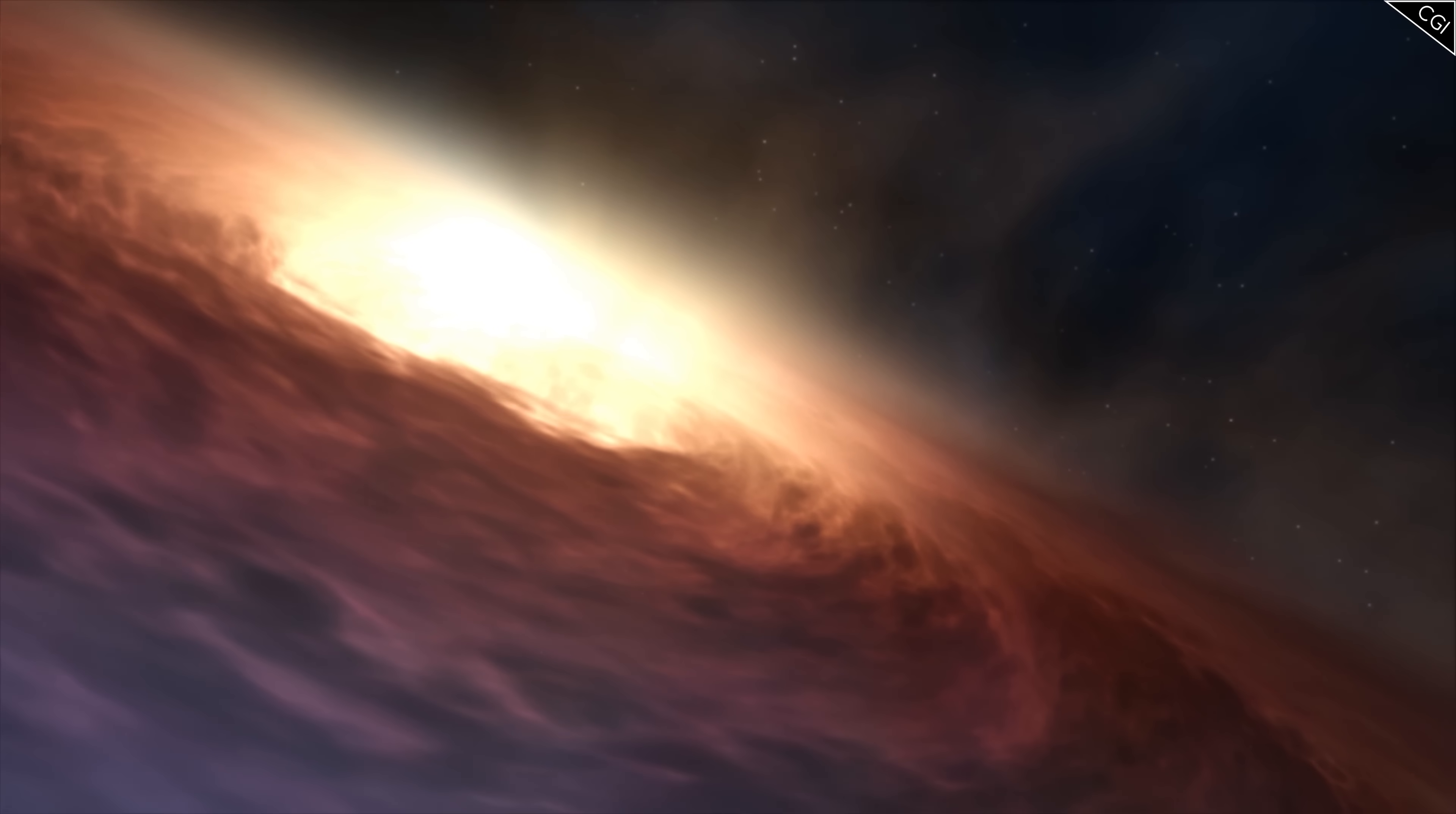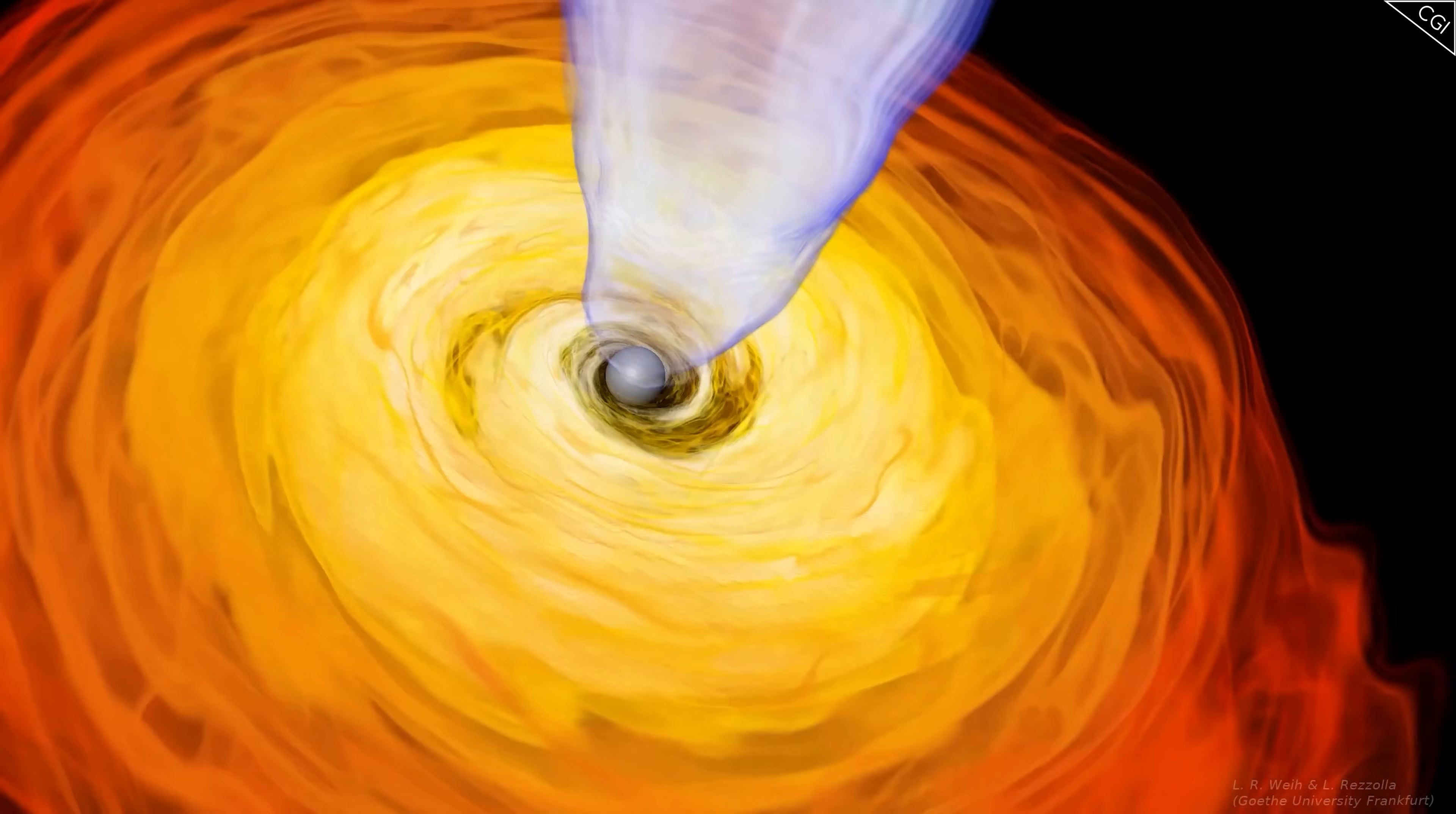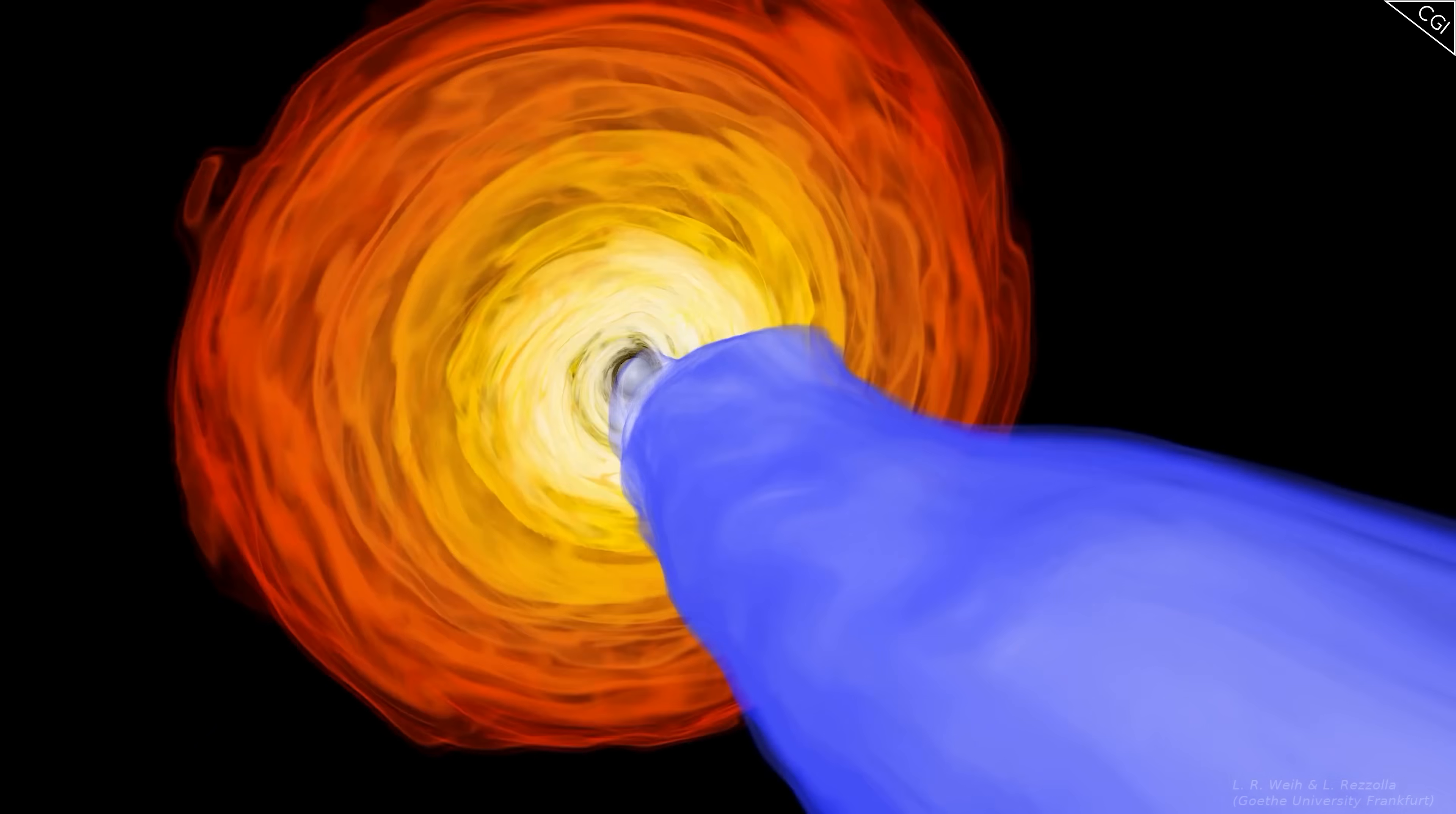Matter in a black hole's accretion disk can reach temperatures up to 10 million Kelvin. This is enough to melt anything down to a hot plasma. All these constant collisions pummel the atoms involved, causing them to give off more and more of this energy, like squeezing a lemon. This reduces their mass.